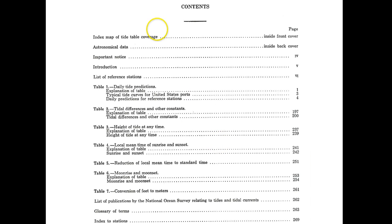Here's a table of contents with lots of interesting information. You can see the index map we just looked at. You can get astronomical data inside the back cover, notices, and a list of reference stations — we'll be using that quite regularly. Table one, table two, table three — you'll be using all of these regularly when calculating the height of tide at any time or what time you'll have a high tide or low. There's also sunrise and sunset times, instructions for converting local time to standard time, moonrise and moonset, a conversion table for feet to meters, a glossary of terms, and an index of stations — you'll be using that quite regularly as well.